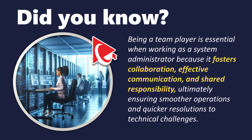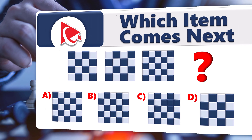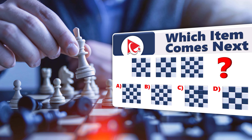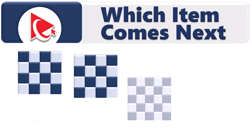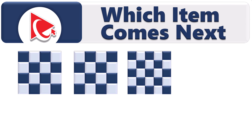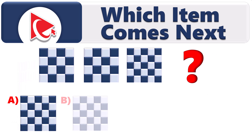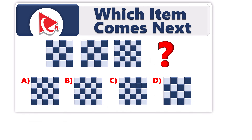Let's dive into an amazing cognitive assessment test question that not only enhances your analytical abilities but also improves your valuable problem-solving skills you can apply to real-life problems. You are presented with three squares, and you need to determine which square comes next. The next square should be selected out of four possible choices: A, B, C, and D. Take a close look to see if you can come up with the solution.